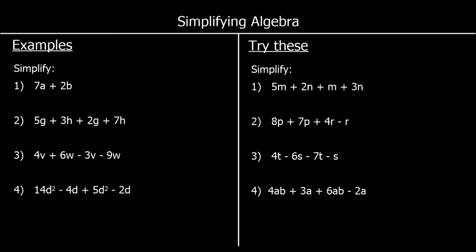We can only add together things that are the same. The first question says 7a plus 2b — a and b are different numbers, so 7 lots of a and 2 lots of b cannot be simplified. That's already its simplest form. If we had 7 lots of 5 and 2 lots of 10, we can't combine those into 9 lots of something — we've just got 7 lots of 5 and 2 lots of 10.